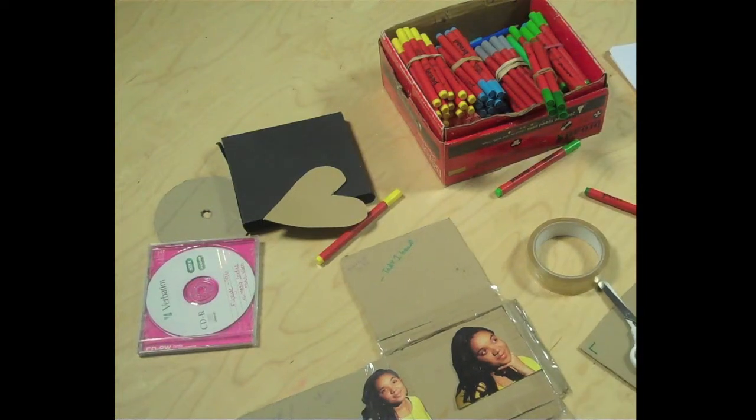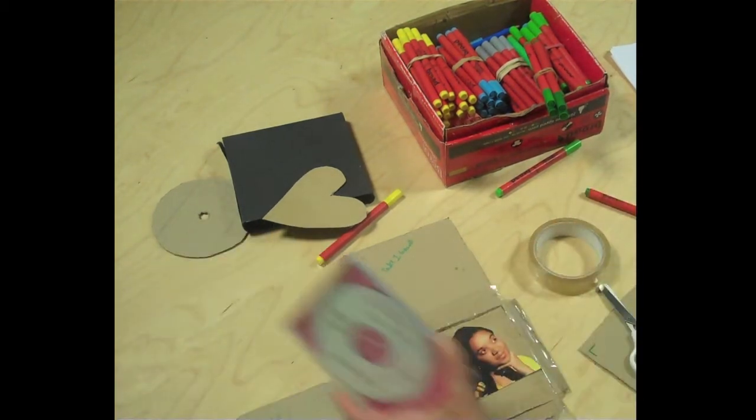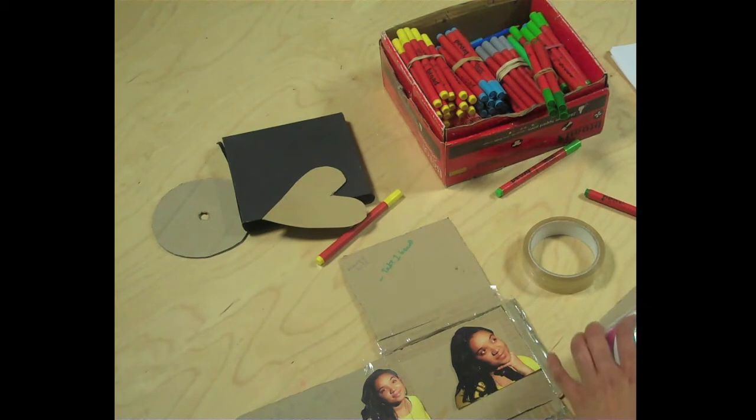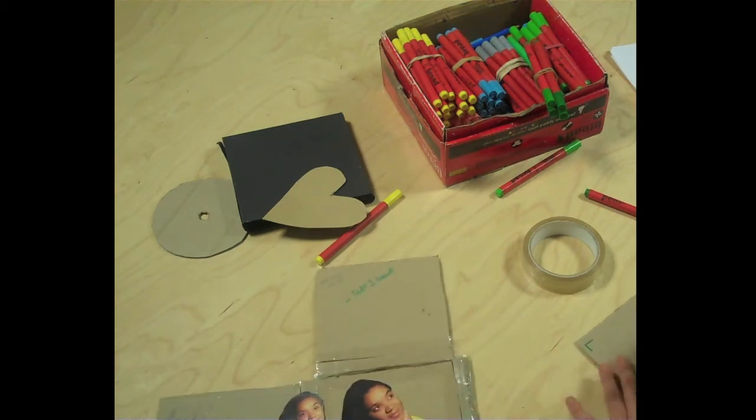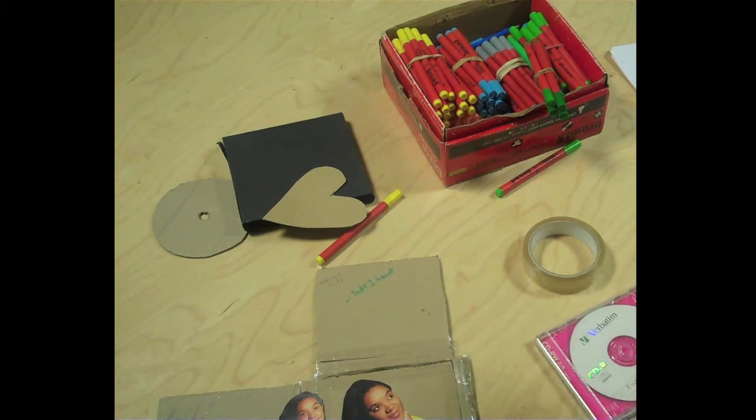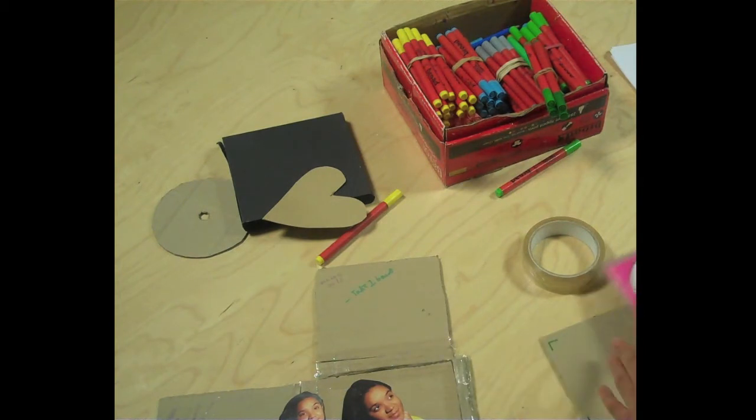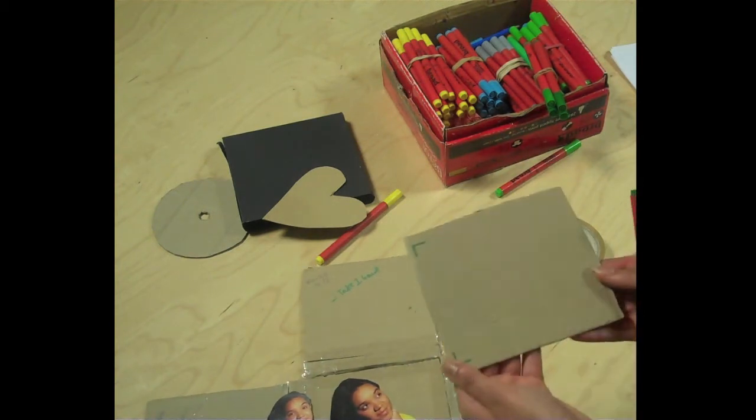So our digipack is going to be 13x13cm and I'm going to use this CD as a template. What I've basically done is just got some cardboard, put it down and drawn around it like so and that's how I've cut it out. I've already done that for you. See here?